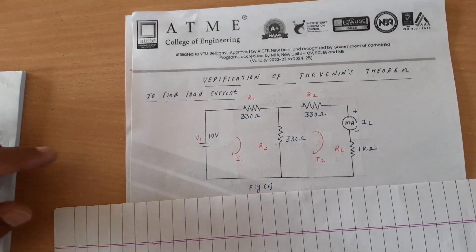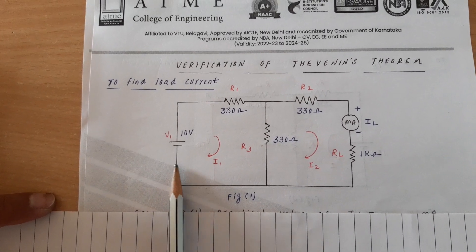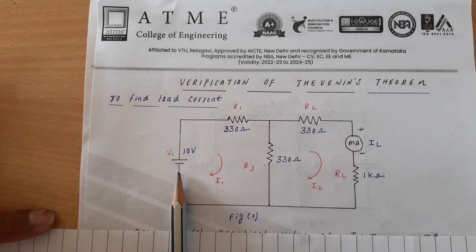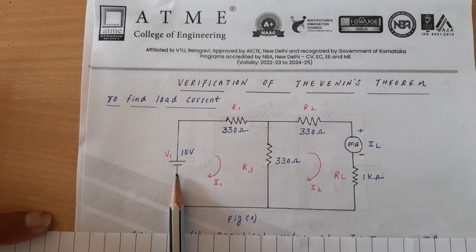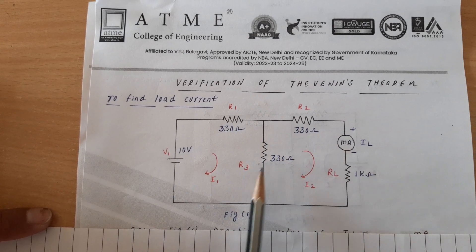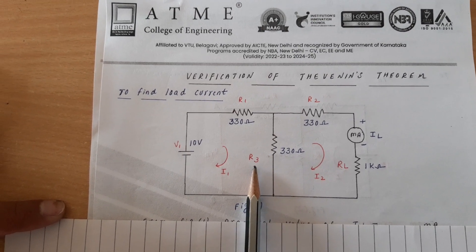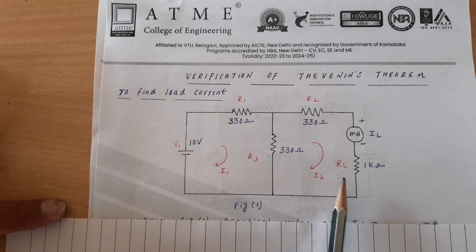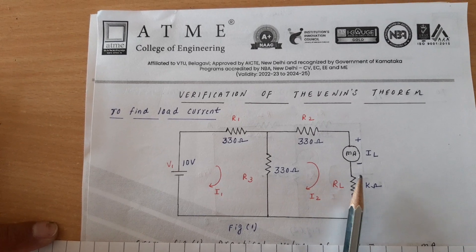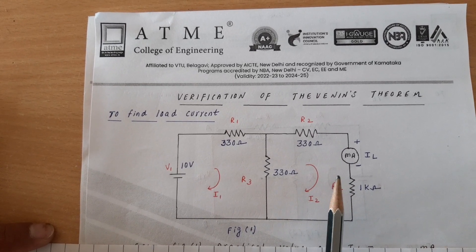Look at the circuit diagram. Here we have a power supply V1 equal to 10 volts, R1, R2, R3 — three resistors of the same value, 330 ohms — and a load resistance of 1 kilo ohm. We also require a milli ammeter to calculate load current.